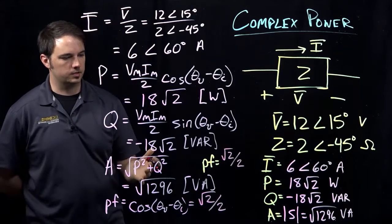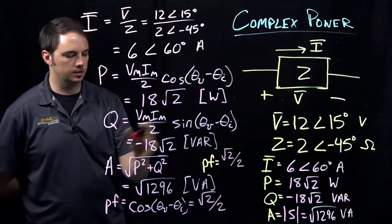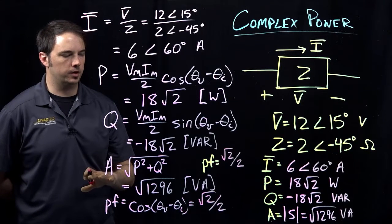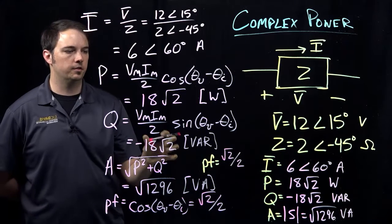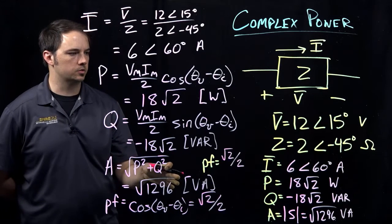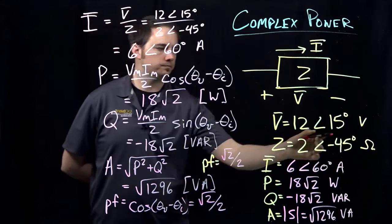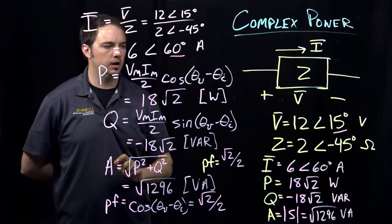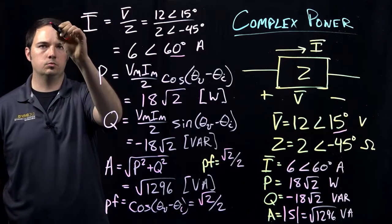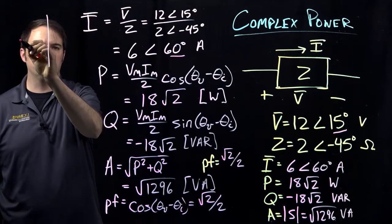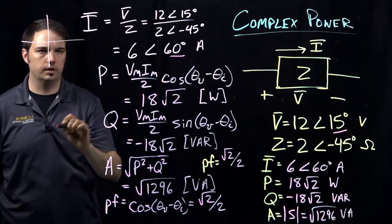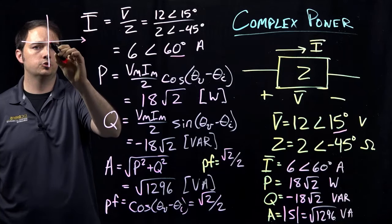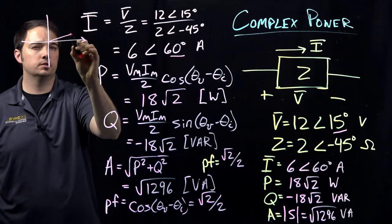Now then we could ask whether or not this power factor is leading or lagging. And for doing that, we're basically evaluating, or comparing more or less, the phase of the voltage to the phase of the current. So we see that the phase of the voltage here was 15 degrees, the phase of the current is 60 degrees. So if we sort of think about how this works out, I always look back to the unit circle kind of case.